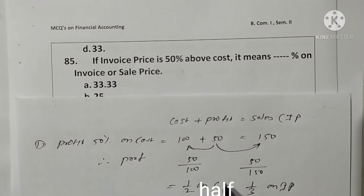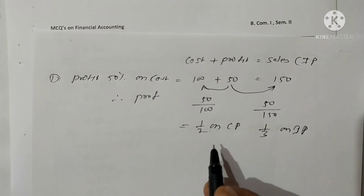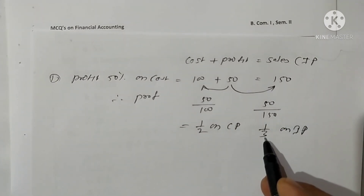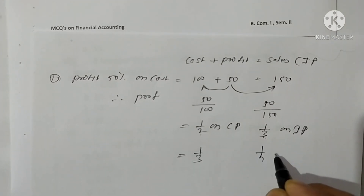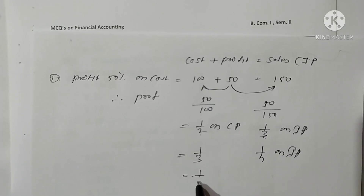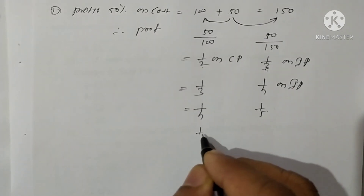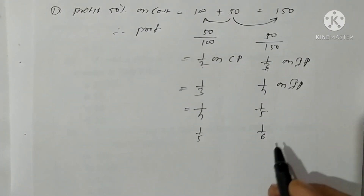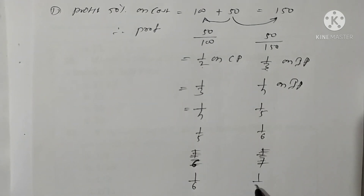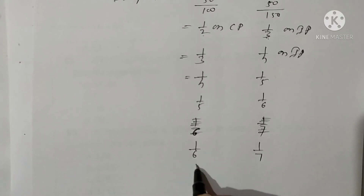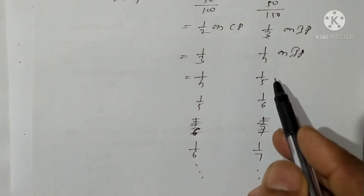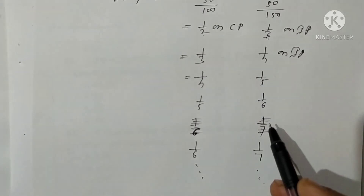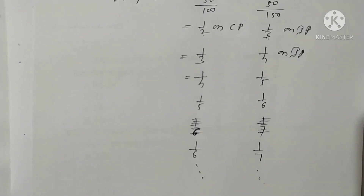The difference is that on invoice price, the denominator is greater than on cost price. For example, one-third on cost price becomes one-fourth on invoice price. Similarly, one-fourth on cost price becomes one-fifth on invoice price. One-fifth becomes one-sixth, one-sixth becomes one-seventh, and so on. The profit percentage denominator is always one greater on invoice price than on cost price. This is the easy technique.